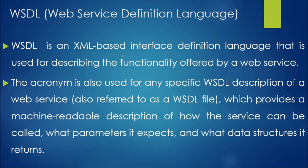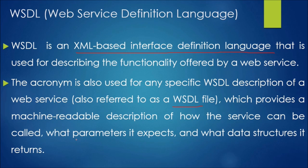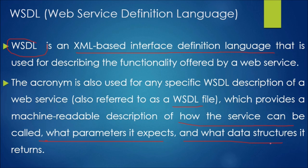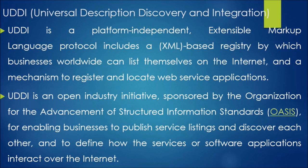WSDL — Web Services Definition Language — is an XML-based interface definition language used for describing the functionality offered by a web service. A WSDL file provides a machine-readable description of how the service can be called, what parameters it accepts, and what data structures it returns. The machine-readable aspect covering parameters and return data structures is the most important thing to remember about WSDL.